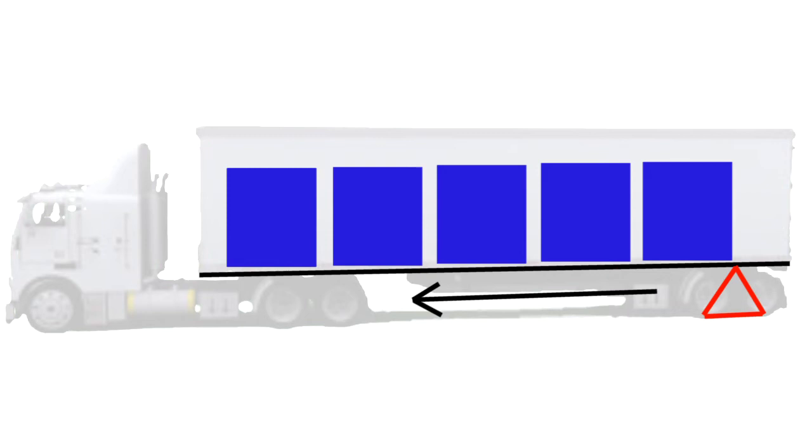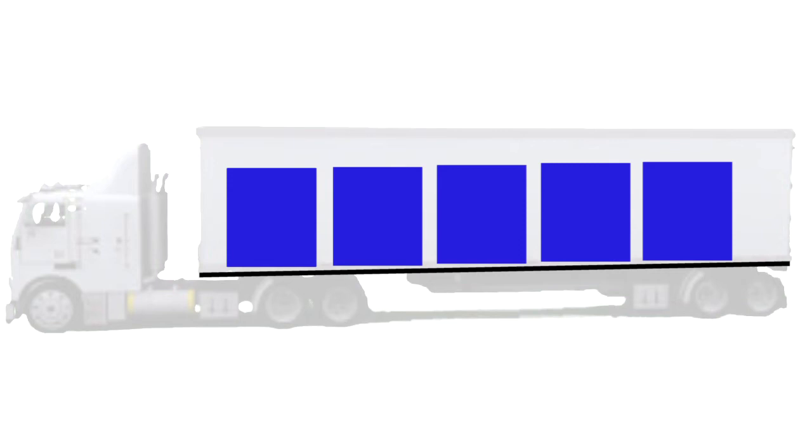So in recap, sliding the tandems forward toward the tractor takes the weight off the drives and puts it on the tandems. And sliding the tandems backward toward the rear of the trailer puts the weight on the drives.